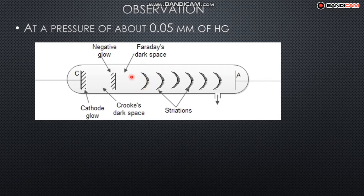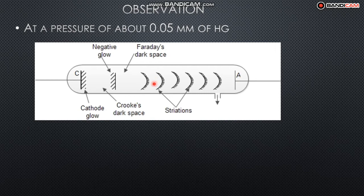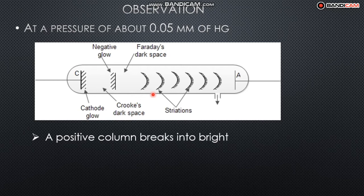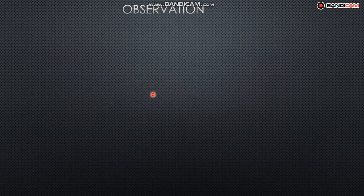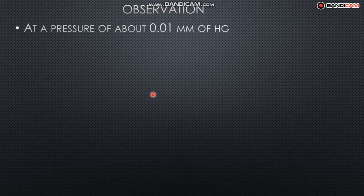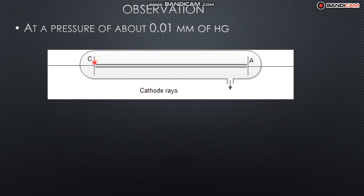At even lower pressure, the positive column shows striations — alternately dark and bright disks within the column. This is the phenomenon of striations. At around 0.01 mmHg pressure, these striations can be seen clearly. The striations are alternately dark and bright regions formed within the positive column.